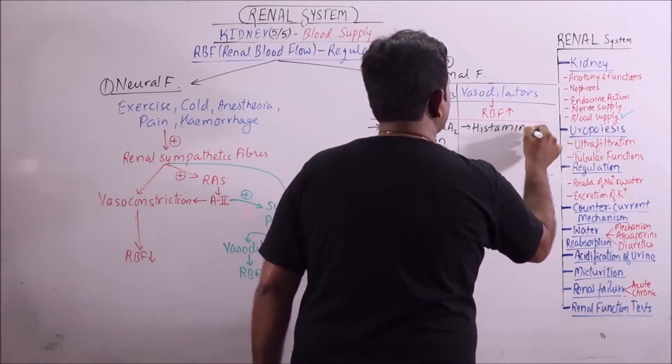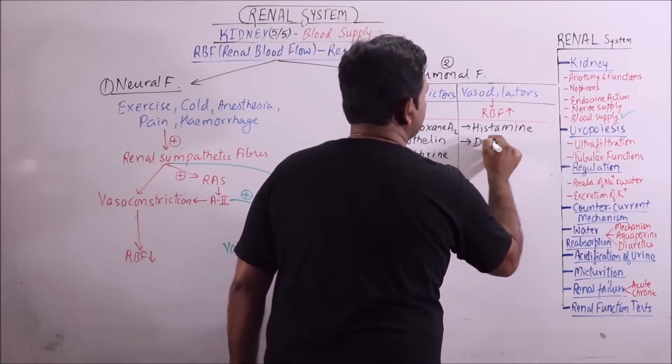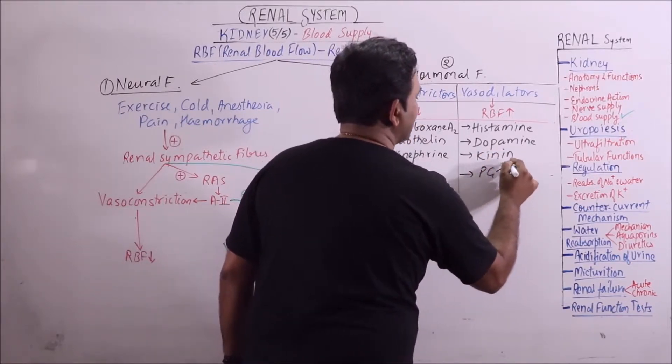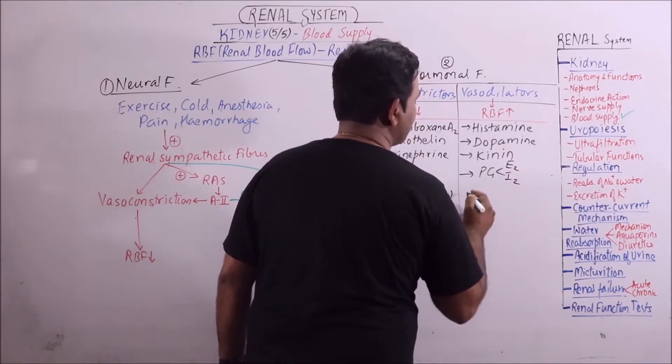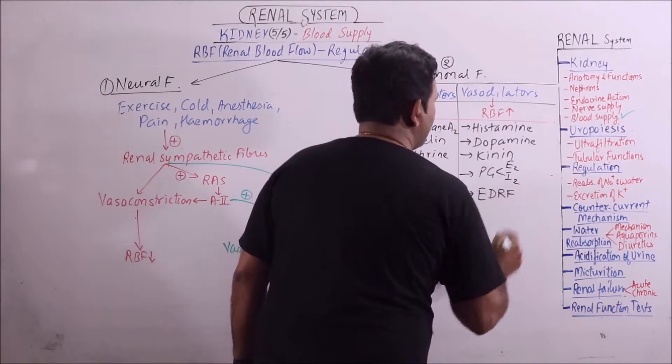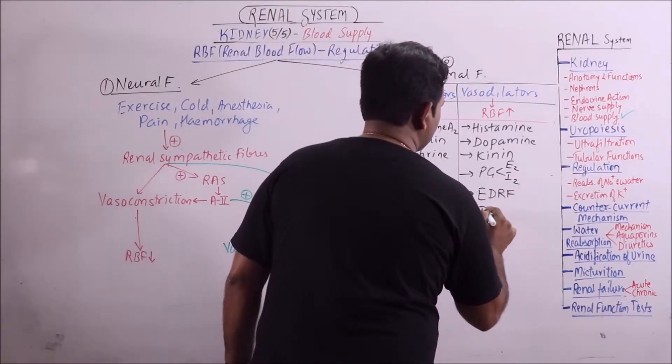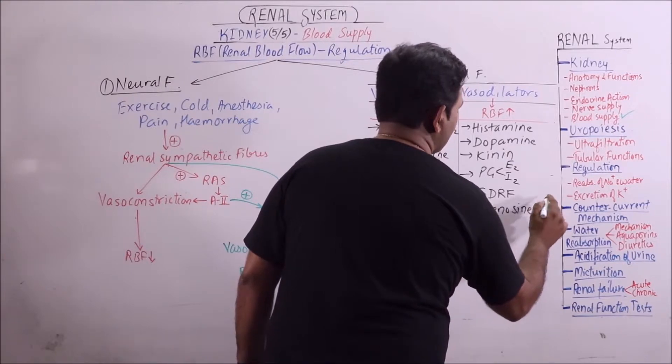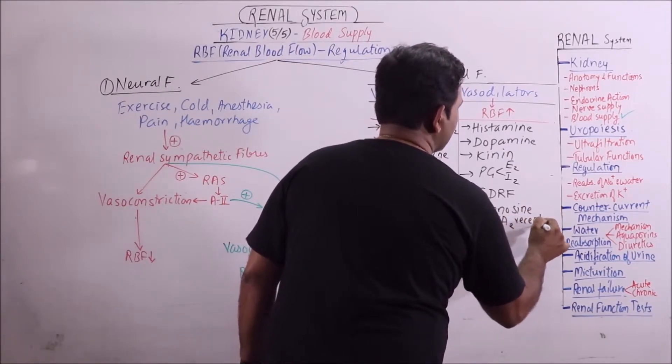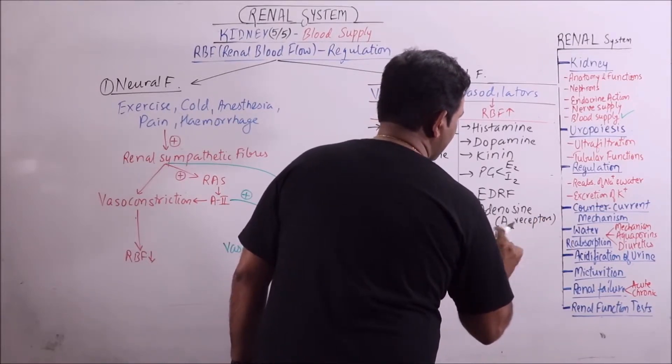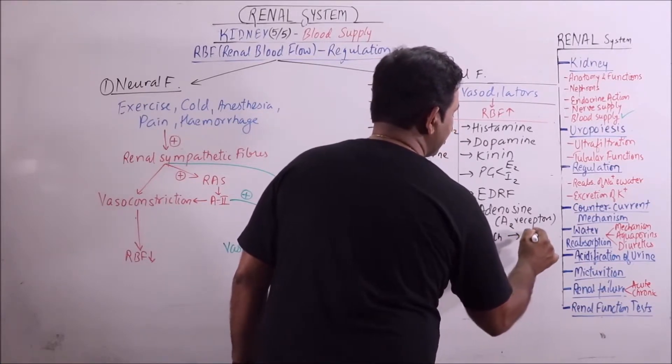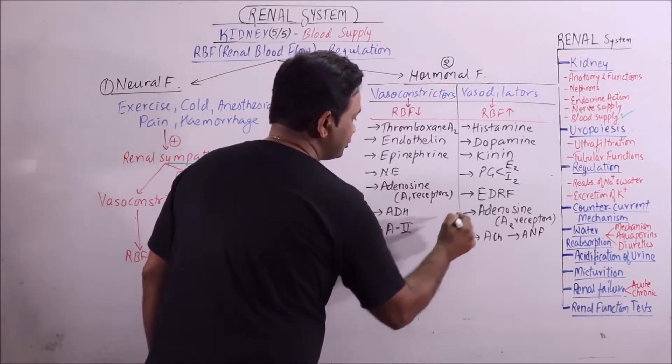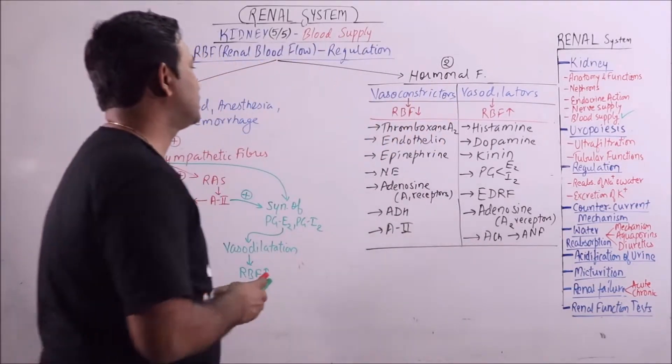Here histamine, dopamine, kinin, prostaglandin E2 and I2, then endothelial derived relaxing factor, then adenosine A2 receptor, then ACH that is acetylcholine, and atrial natriuretic factor. Here A2 can also be added, that is angiotensin 2. So these are the hormonal factors.